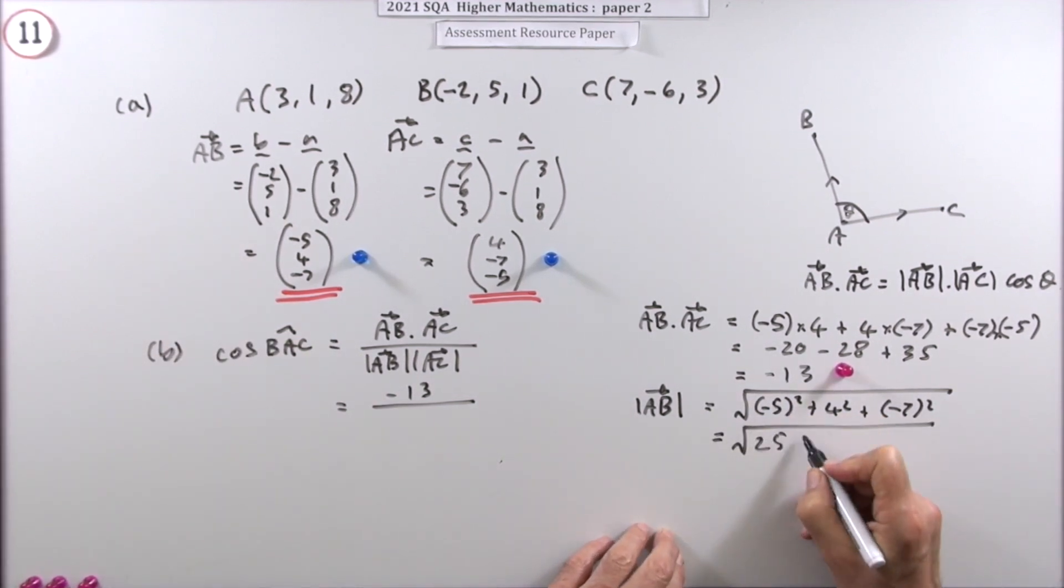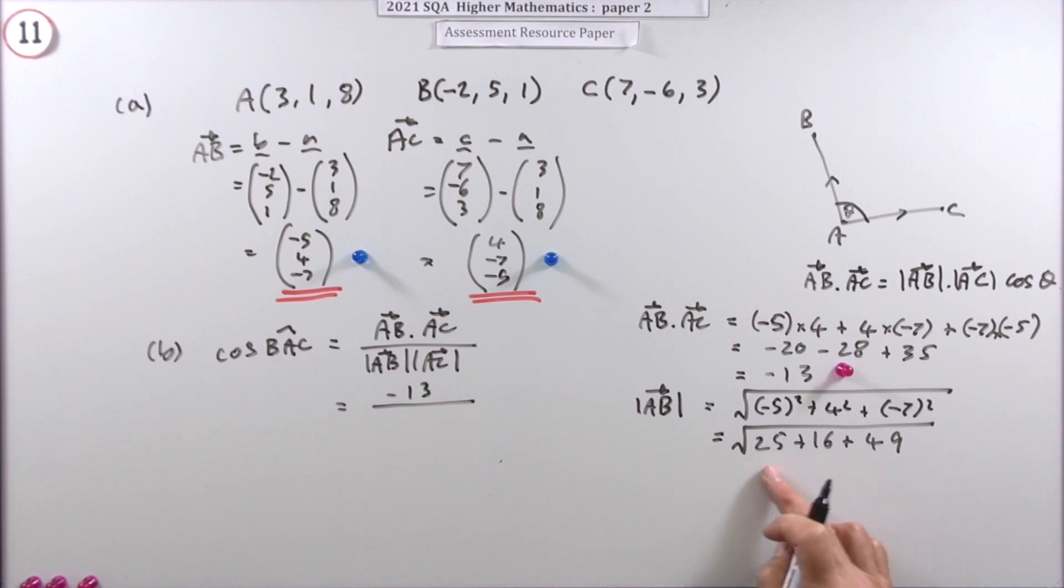So it'll be 25, 16 and 49. That's quite handy because there's a one there to add on to that 9. So that comes to 90. Now you could break that down. I know that's 3√10, but you could be multiplying it by something else that's actually going to be the same thing. I'll put down the other one.